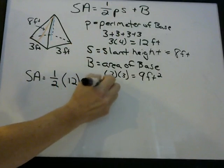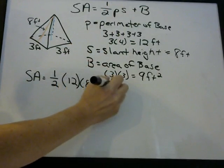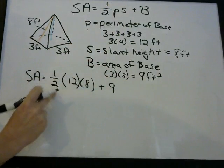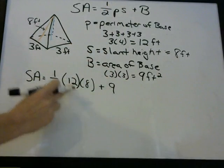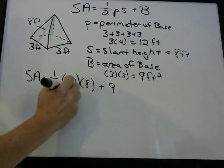Plus B, the area of the base, which is 9 feet squared. One-half times 12 times 8 — if you do that multiplication, you're going to get 48.